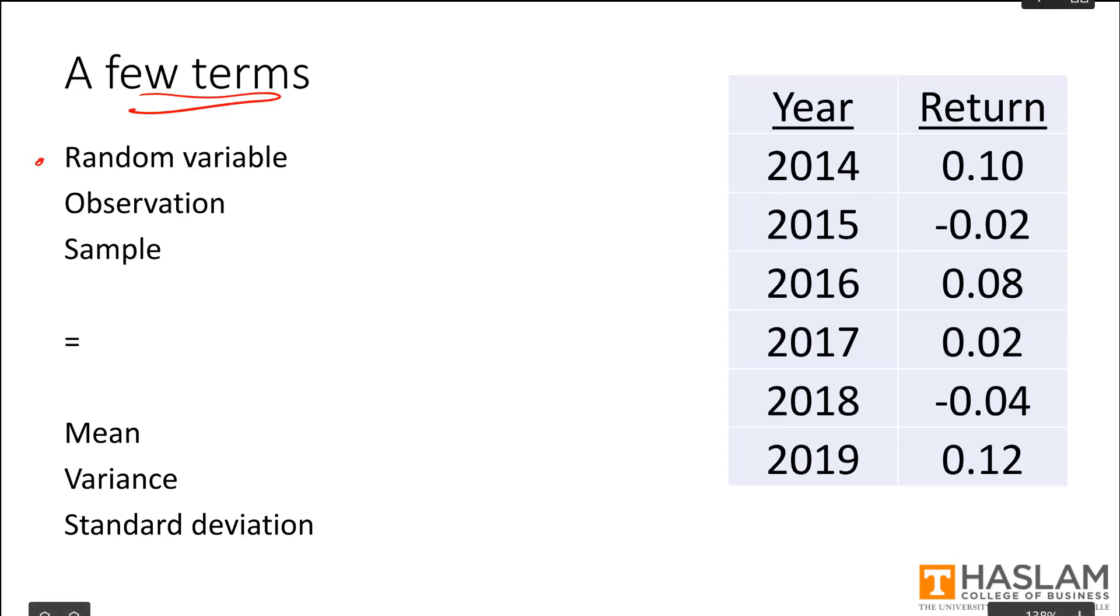First, a random variable. A random variable is a variable whose value is unknown, and it's something that you can think of as the outcome of some experiment. A prime example of a random variable in finance is a stock return.